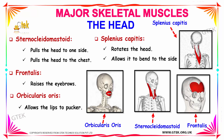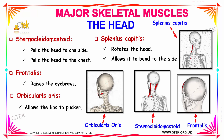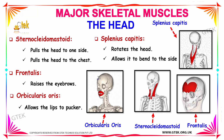Let us see the muscles that are located in the head. Sternocleidomastoid is the muscle located here. You can see the location of the muscle. It pulls the head from one side to the other and it pulls the head to the chest. These are the functions of the sternocleidomastoid.